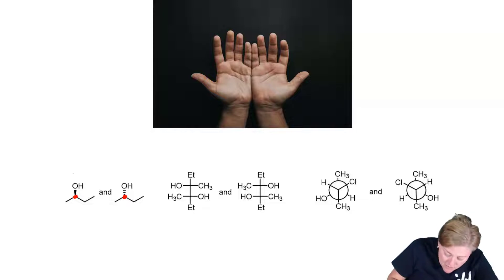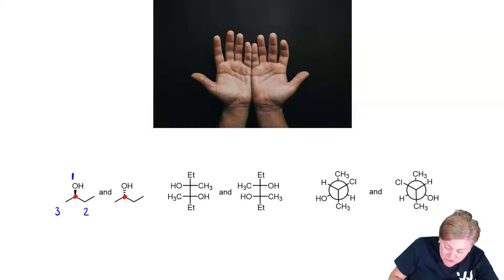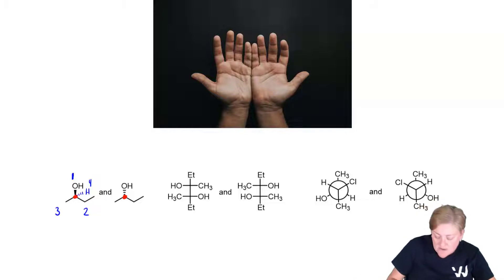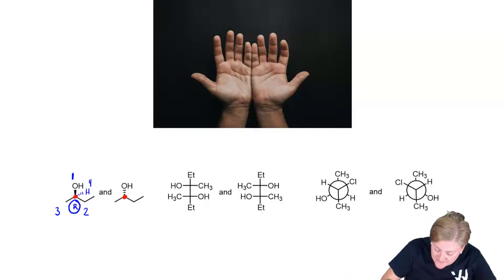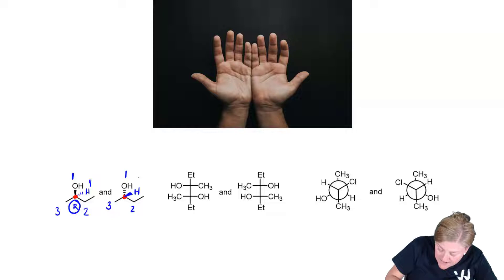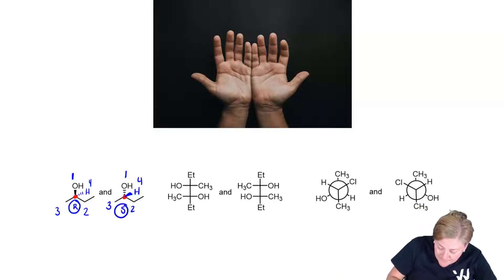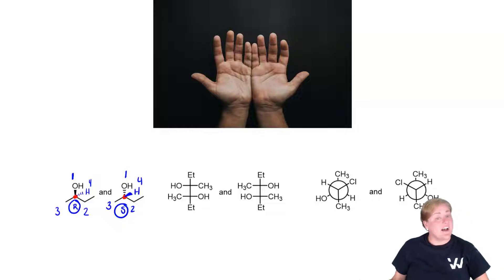One has the OH group forward and one has it backward. For completeness, let's assign R versus S nomenclature. On the left structure: OH is priority one, the longer chain is two, the shorter chain is three, and hydrogen is in the back at four. Tracing one to two to three is clockwise, and since group four is in the back I keep the assignment — this is R. For the other structure: tracing one to two to three is clockwise, but group four (hydrogen) is forward, so I flip the assignment — this is S. They are indeed enantiomers.